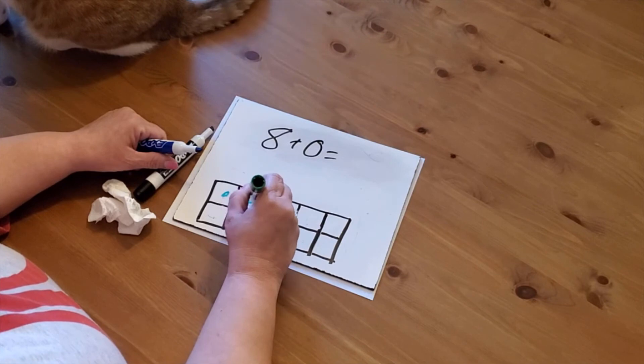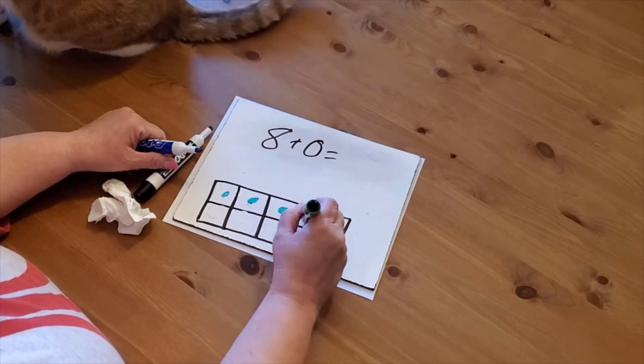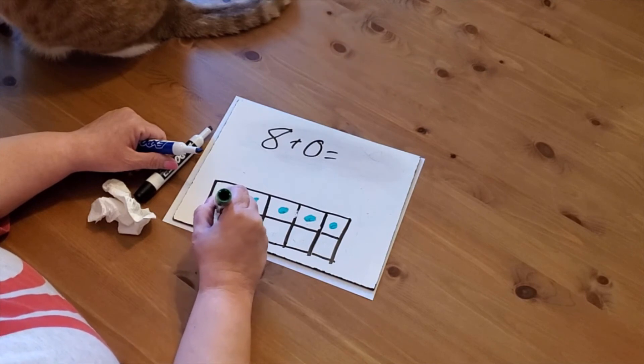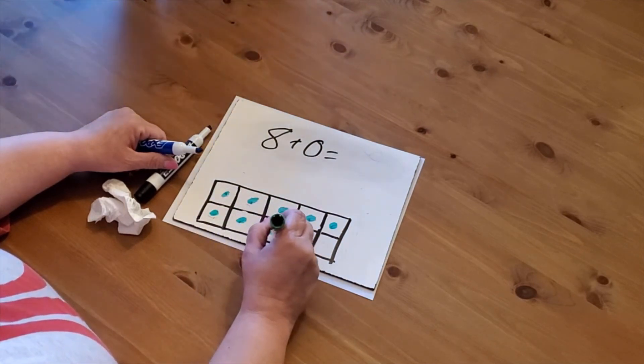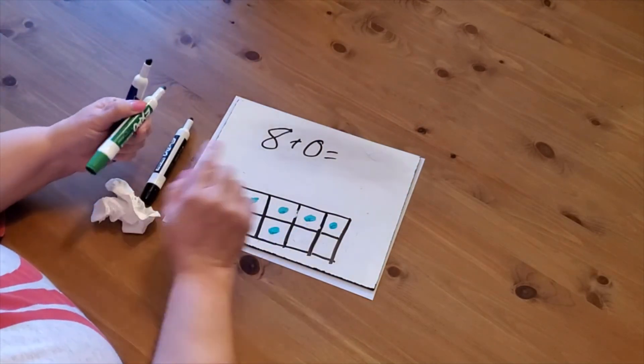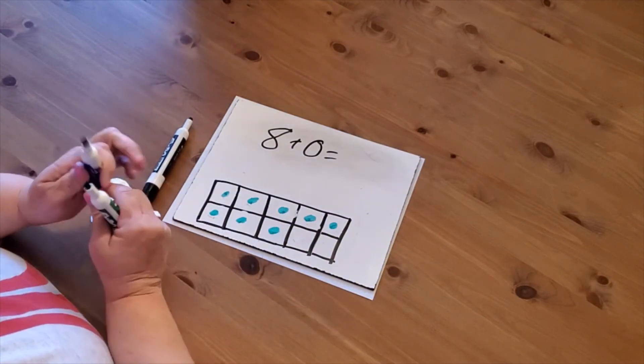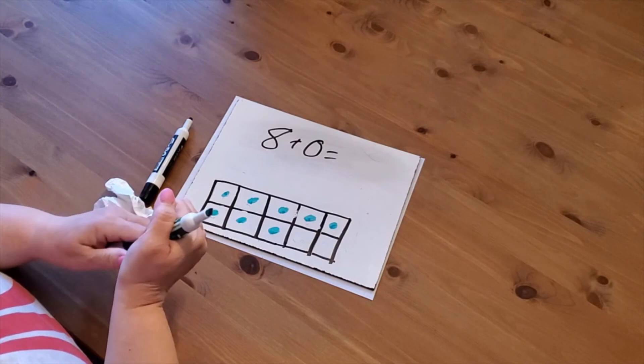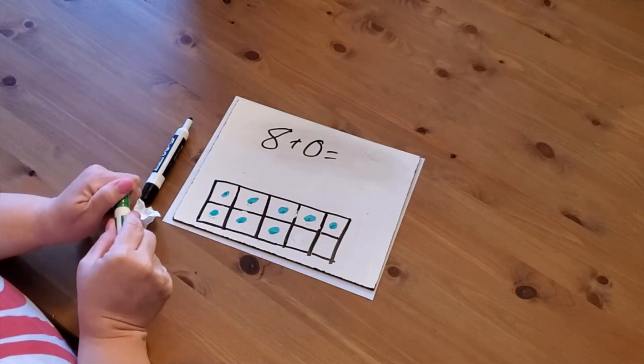One, two, three, four, five, six, seven, eight, plus zero more. Remember that zero is zero, nothing. They don't want me to add anything else. So 8 and zero more just leaves me with 8.